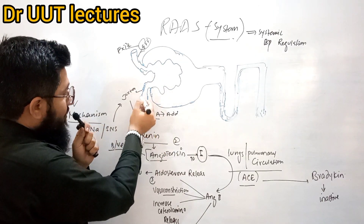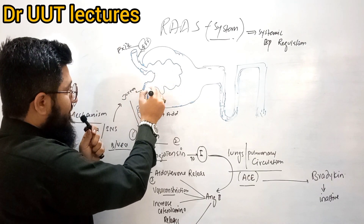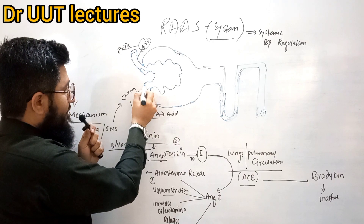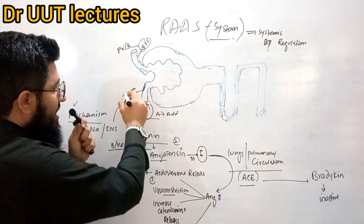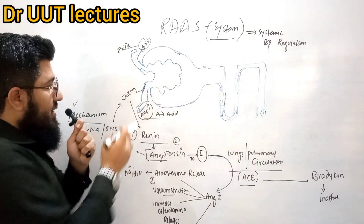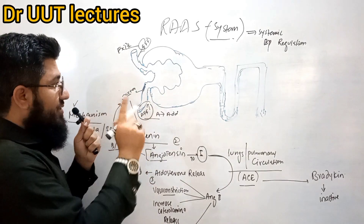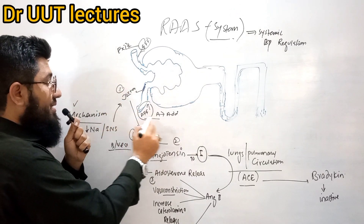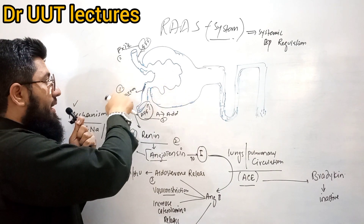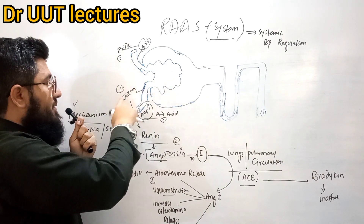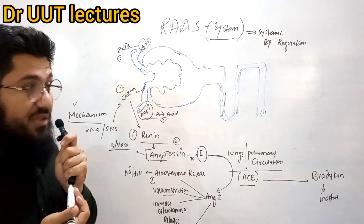Near the glomerulus, in that portion of the arterioles, there are certain cells known as juxtaglomerular cells. 'Juxta' means next to, so these cells are very near to the glomerulus. Remember these three important structures: juxtaglomerular cells, afferent arterioles, and efferent arterioles — they will help you understand the RAS system easily.